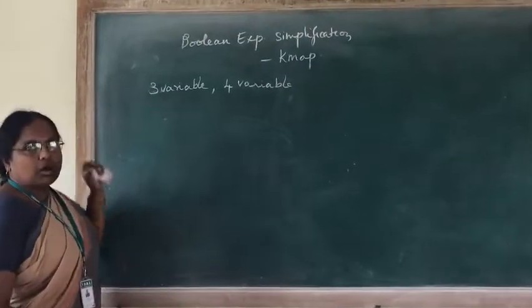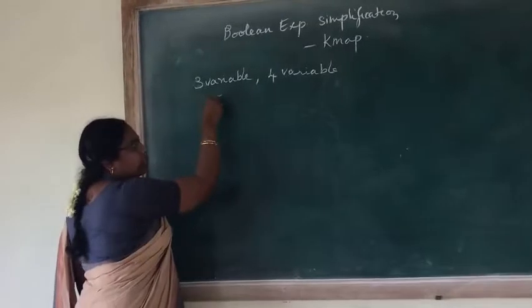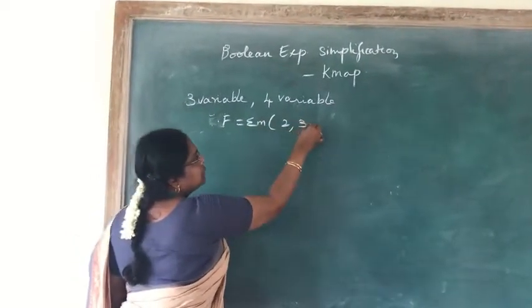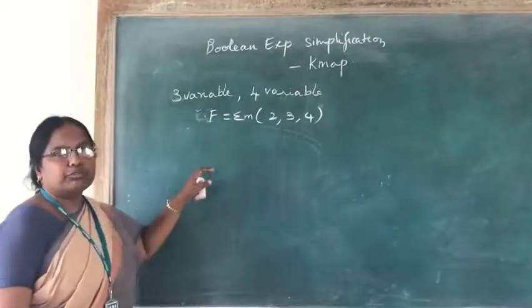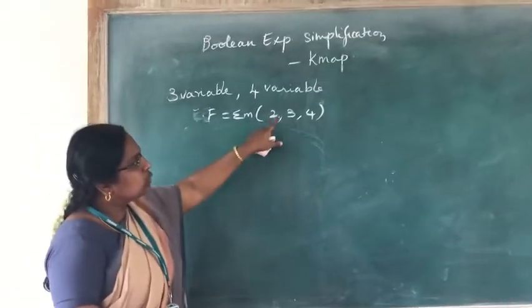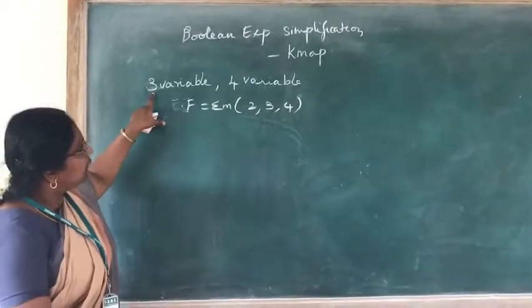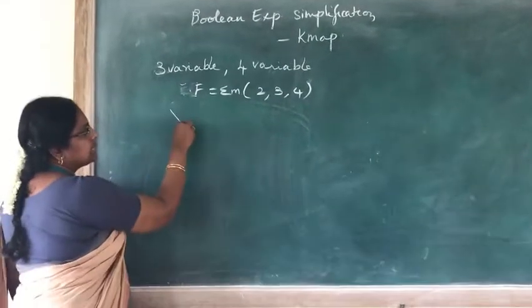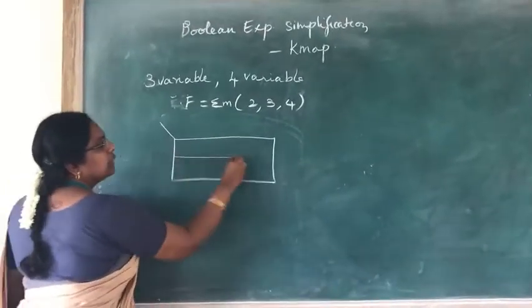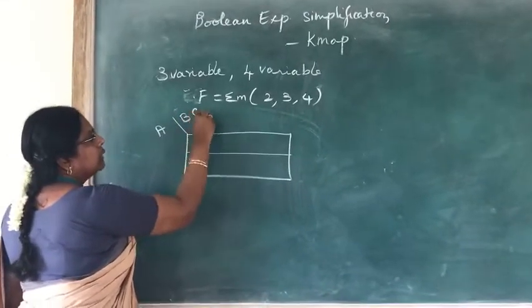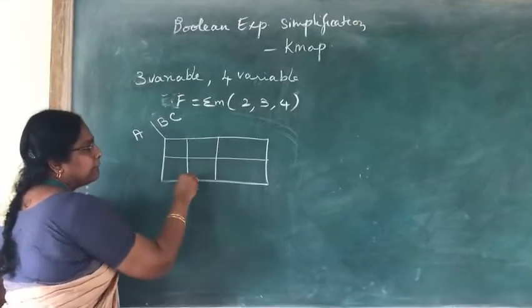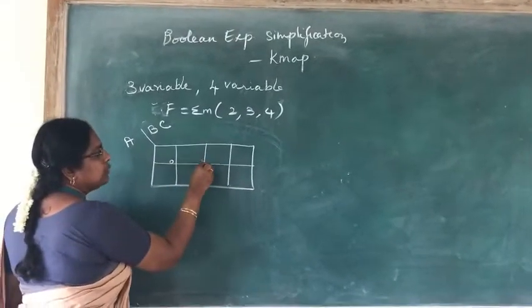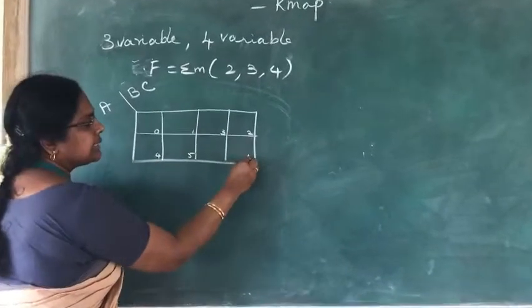In a three-variable Karnaugh map, we will have a function expressed as a summation of min terms — for example, summation of min terms 2, 3, and 4. These can be plotted in a three-variable K-map and grouped to write the product terms. Since it is a three-variable K-map, we will have 8 cells numbered 0 through 7.